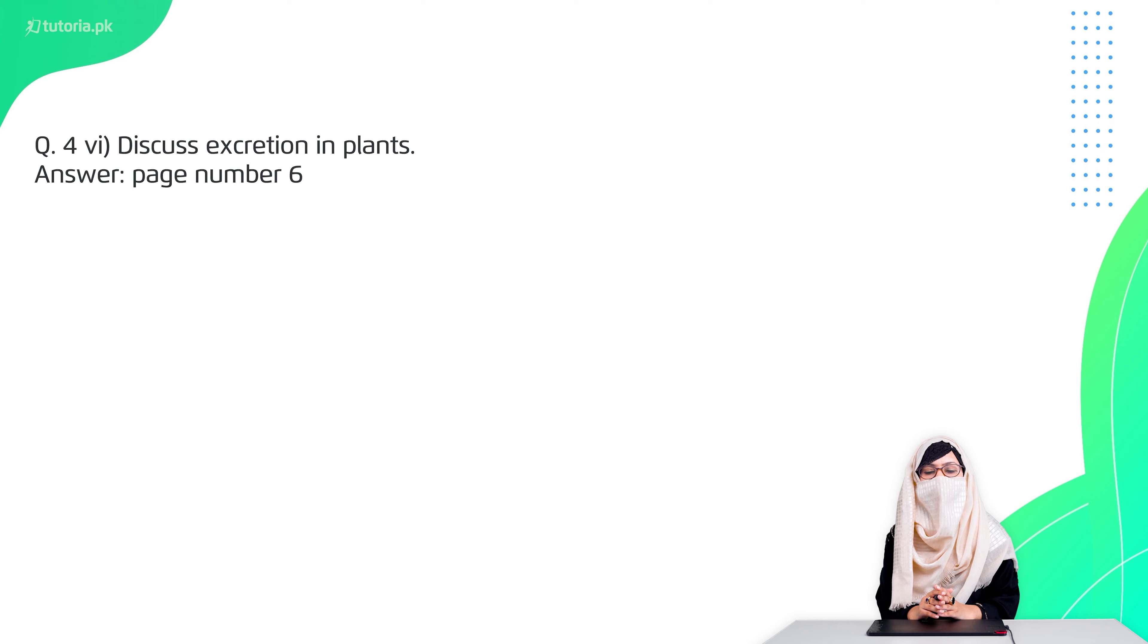Question number 6 is discuss the excretion in plants. The excretory mechanism is different from animals. Then there's a spot in the roots and some chemicals that are released. Then you have to tell the roots into your roots, the excretory material. These will explain all your headings in the headings. These two are the message in page number 6.